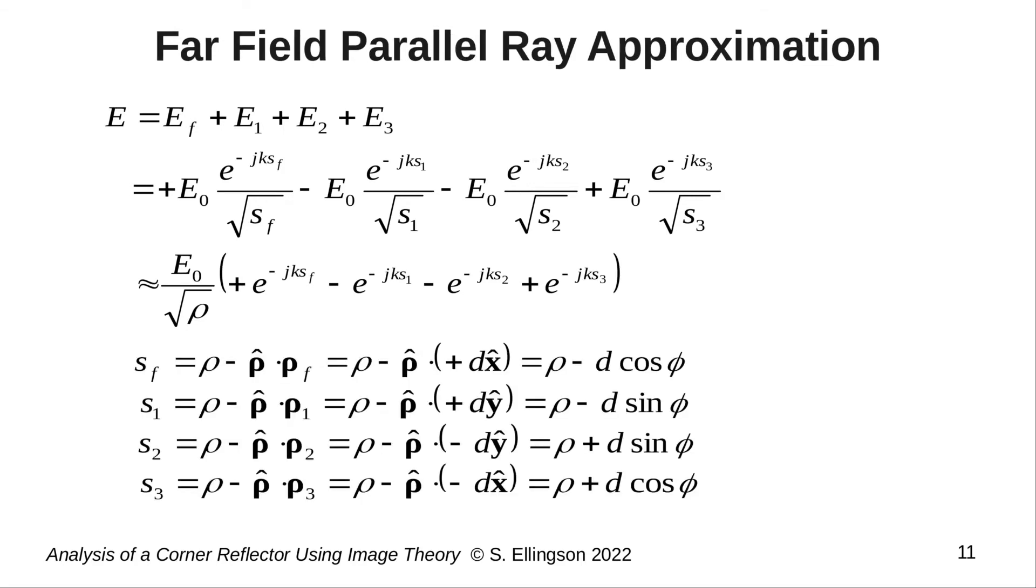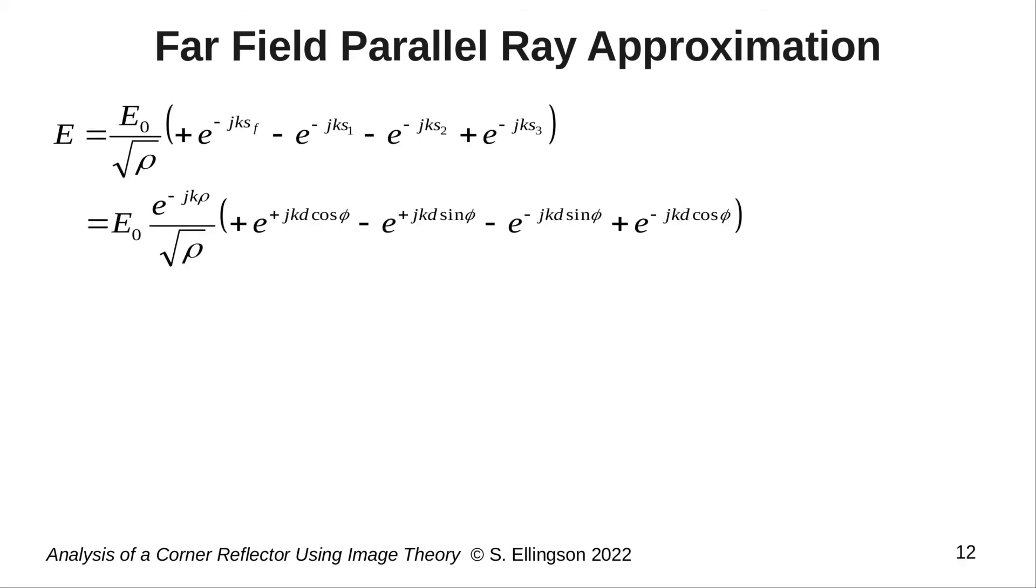Here's the math for implementing the parallel ray approximation. This is the usual routine, and for each distance we are left with a common distance rho from the origin to the field point, plus a term that corresponds to the change in distance associated with the geometry of the ray. Easy peasy. Now making those approximations, we've reduced the original expression to the far field expression shown here.